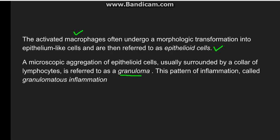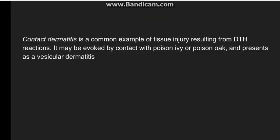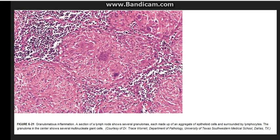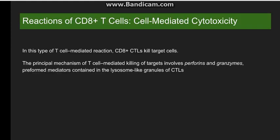Granulomatous inflammation is the delayed type of hypersensitivity reaction; it will be discussed in detail in another video. In this picture we can see a granuloma with giant cells. Another example of delayed type of hypersensitivity reaction is contact dermatitis, which is due to contact with poison ivy.